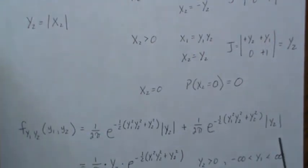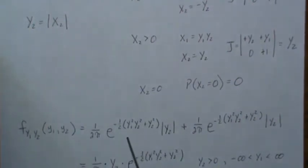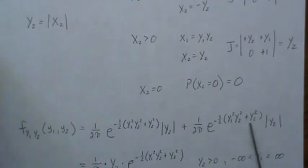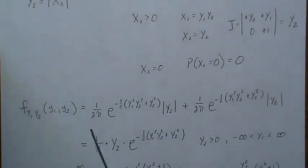Then we have to do it over this range, so it's 1 over 2π, and we plug in these values in for our X1 and X2, and we get this times absolute value of the Jacobian. Now if we look at this, they're exactly the same.